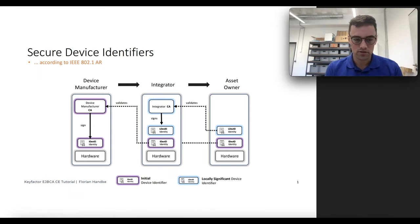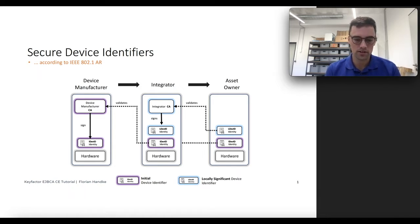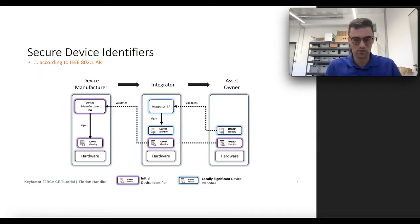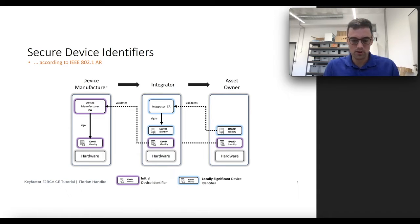802.1 AR describes basically three parts: two identities or identifiers. The IDevID, which is the Initial Device Identifier provided by the device manufacturer, securely stored on the hardware. The LDevID, which is the Locally Significant Device Identifier provided by an indicator or asset owner, and this could basically be an OPC UA or MQTT certificate. And a software stack beneath it, which does the management, the validation and other stuff.